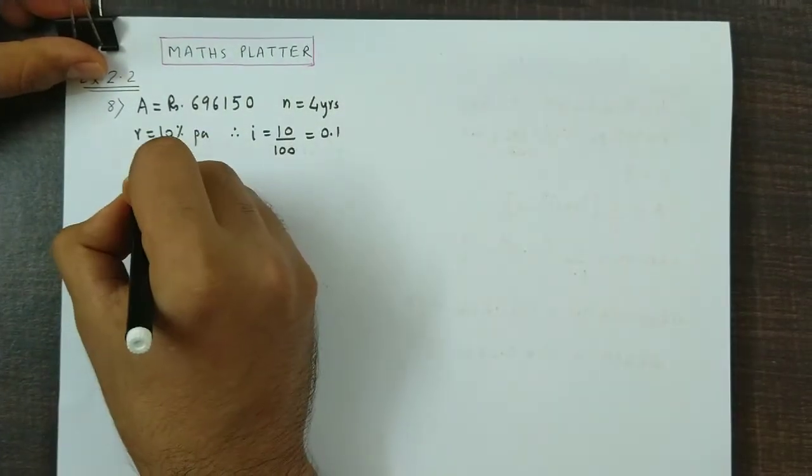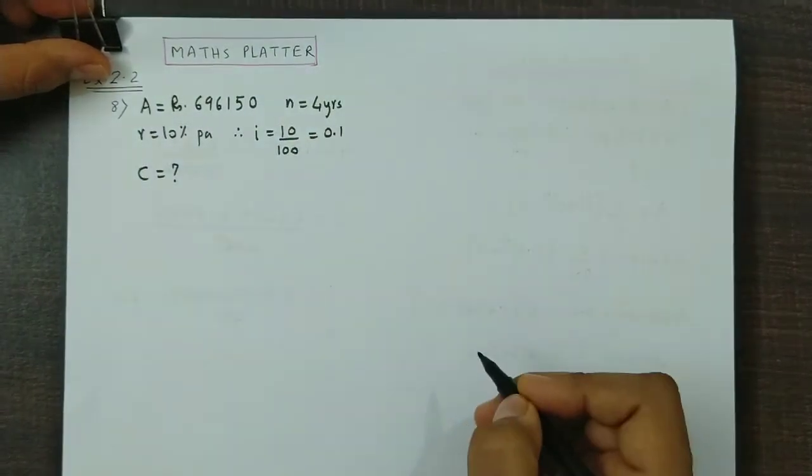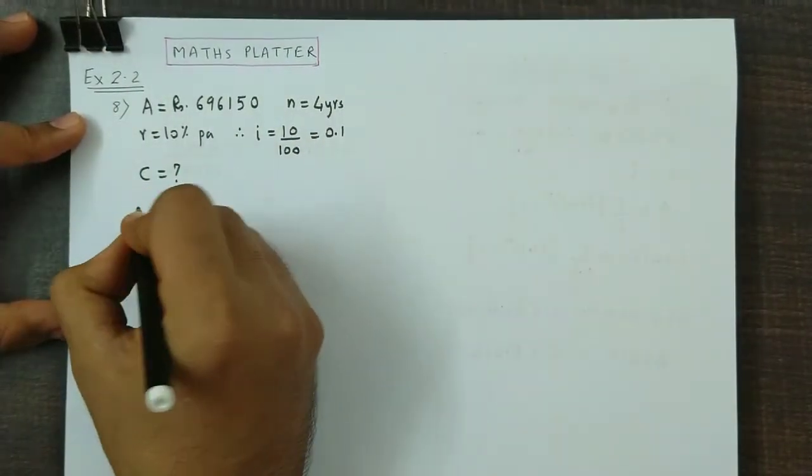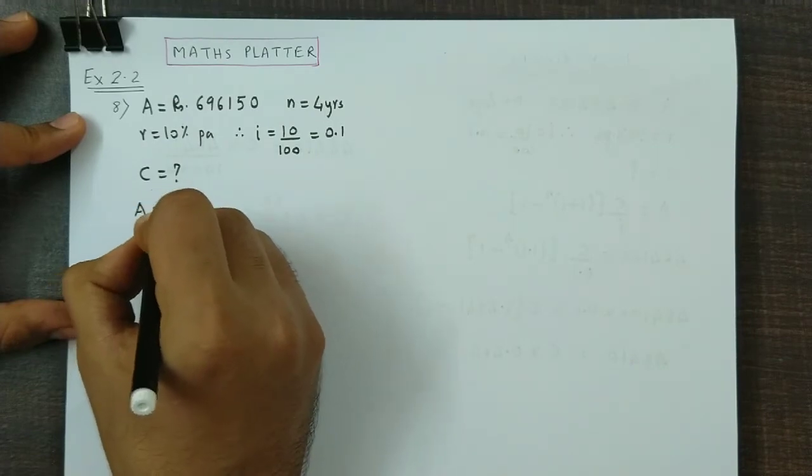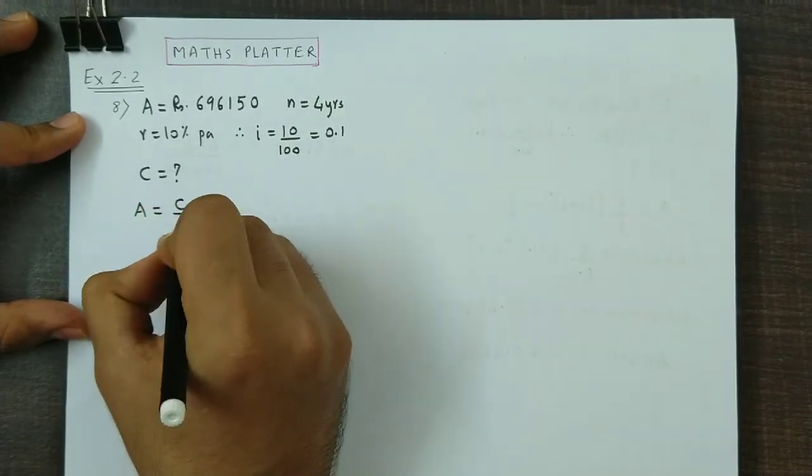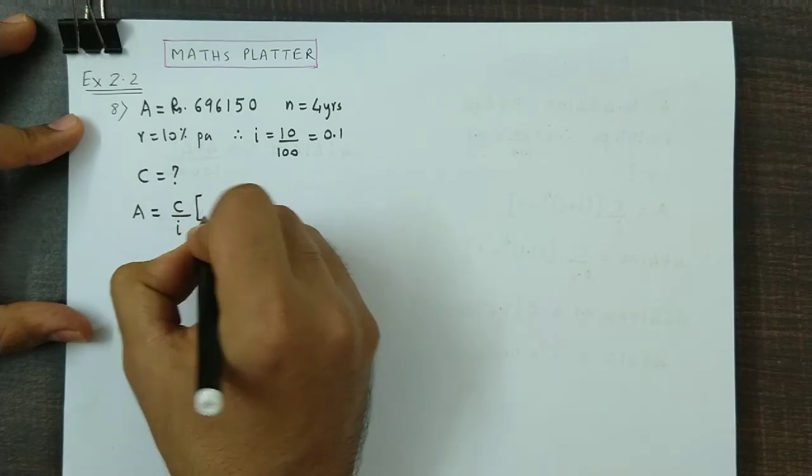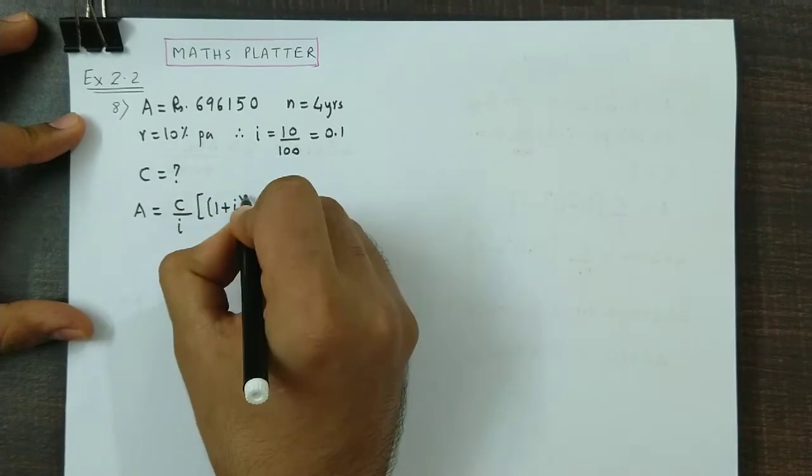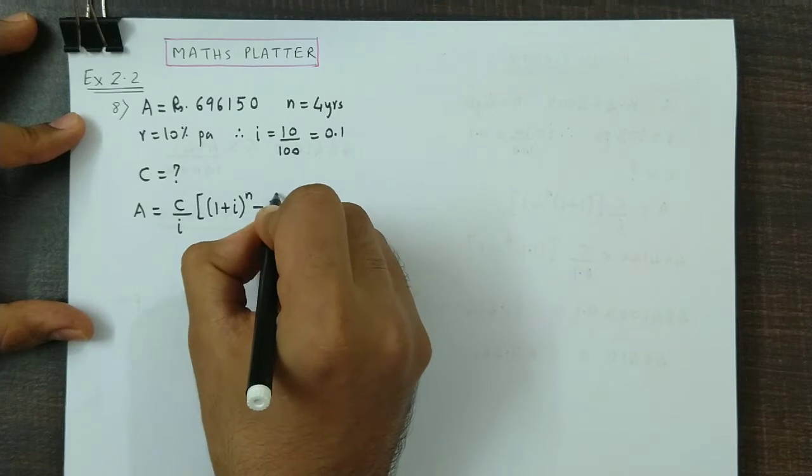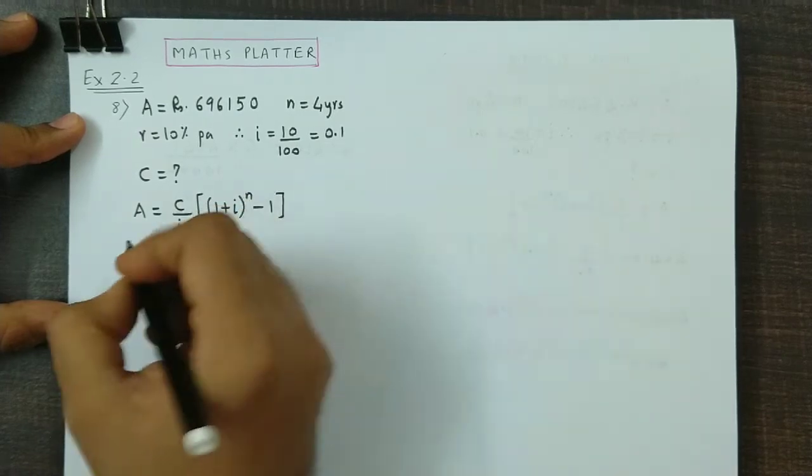We need to find the installment. We need to find C value. Again, we use the accumulated value formula: C by i into 1 plus i raise to n minus 1.